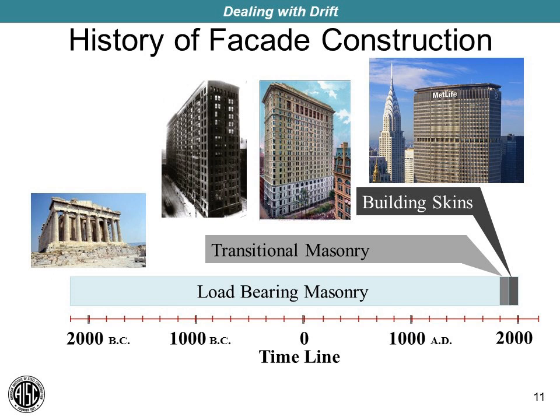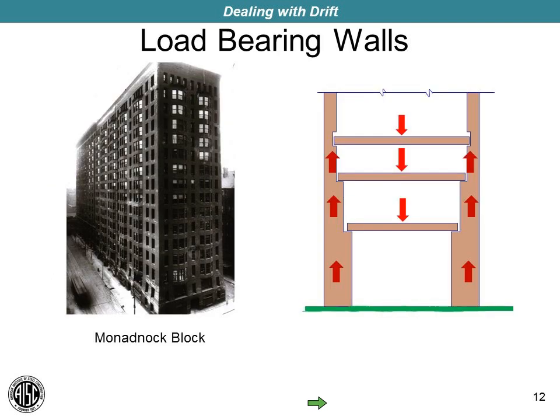Before we dig into that, I think it's interesting to take a look at the history of facade construction and how we've been doing this for millennia. For thousands of years, we've been constructing buildings using load-bearing masonry walls and piers and we still do. Toward the end of the 19th century, we started developing steel frames to support building loads — called transitional masonry buildings. And sort of in the middle of the 20th century, we started developing what I call skinned construction.